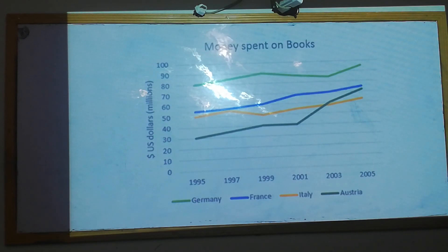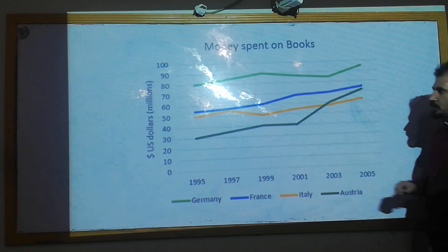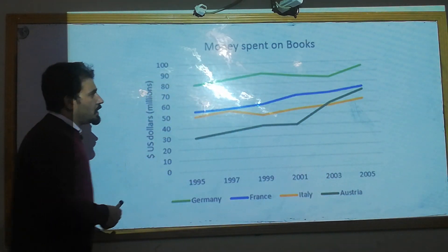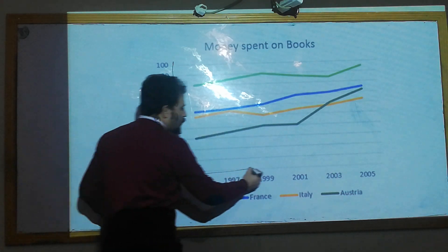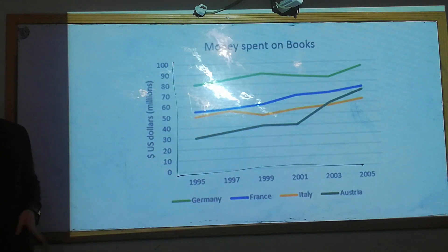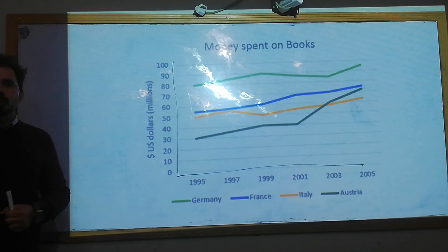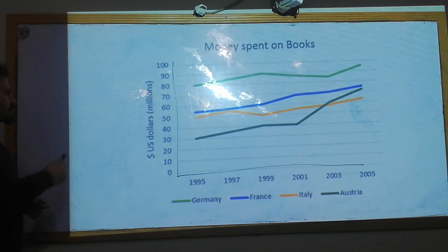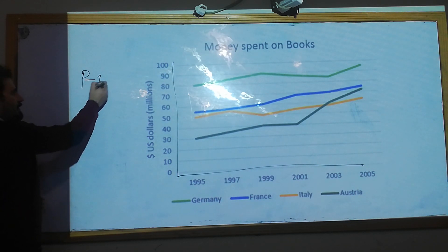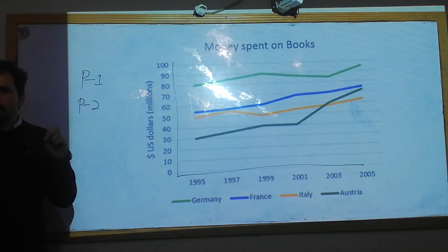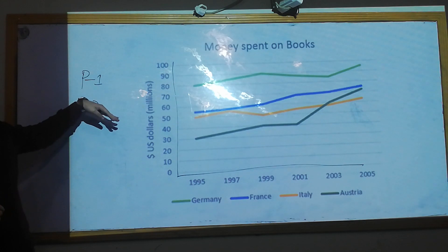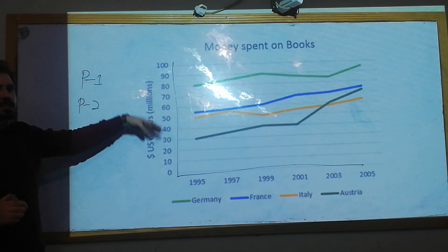Let's talk about the supporting overview paragraphs for a line chart. Look at this graph. There is your y-axis and the x-axis. After an introduction part and after an overview part, we want to write down two supporting overview paragraphs — paragraph number one and paragraph number two — giving explanations about the chart.